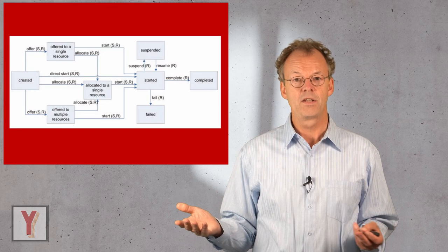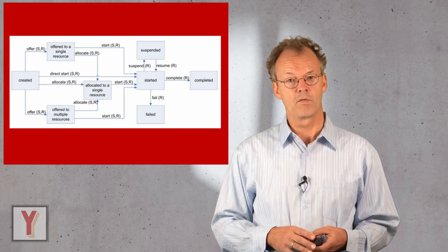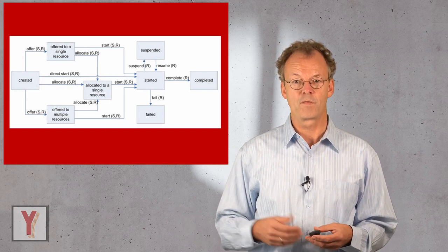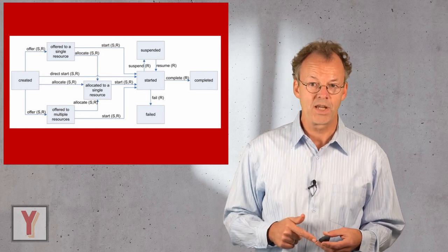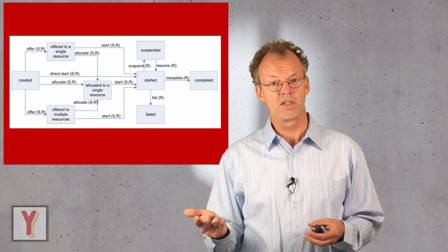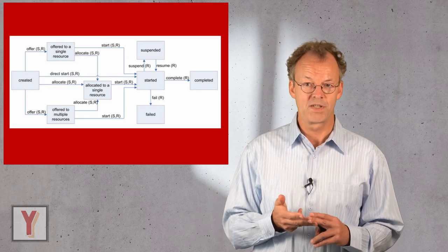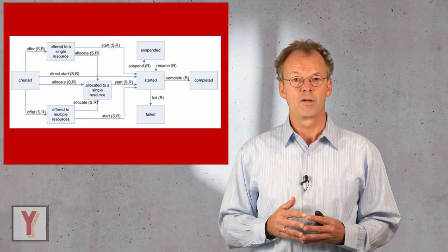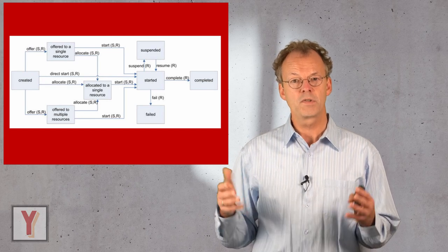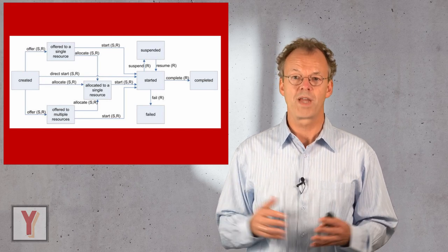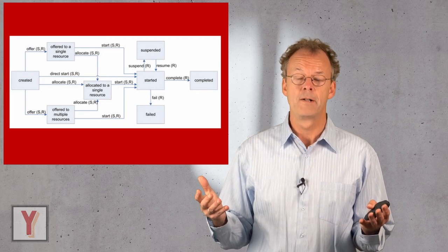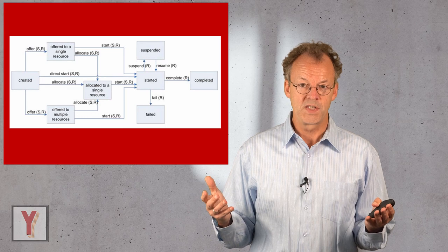On the next slide you can see the life cycle of a YAWL work item. Work items in YAWL are first offered, then they can be allocated, then started, and finally completed. This life cycle of the YAWL work item closely corresponds to what we have in the XES state chart that I showed you before. And this is not a coincidence.